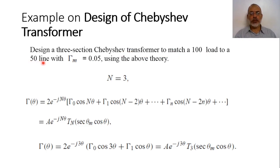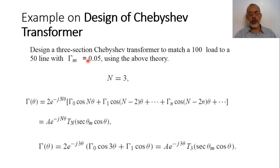The maximum reflection coefficient gamma_m equals 0.05. In this case, Z_load is 100 ohm, Z_0 is 50 ohm, and gamma_m is 0.05, with three sections, so the value of n is 3.